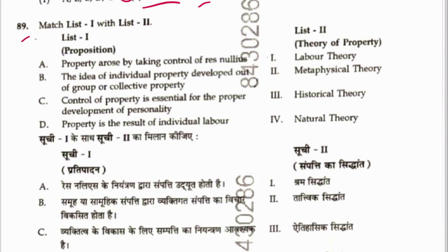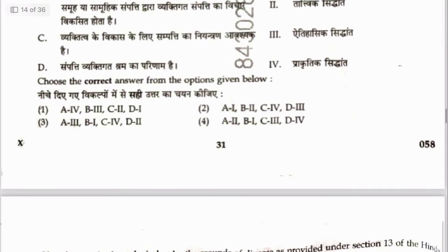Question 89: Match theories of property. Property arose by taking control of rationalities — natural theory. Individual property developed out of group or collective property — historical theory. Control of property is essential for development of personality — metaphysical theory. Property is the result of individual labor — labor theory. Sequence is 4, 3, 2, 1. Answer is 1.